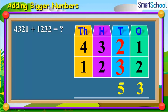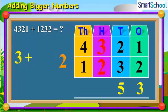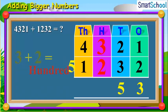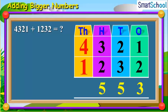Now, let us move on to the hundreds digits. Add the hundreds digits together, which will be 3 plus 2 is equal to 500. Now, place 5 at the hundreds place. Now, add the thousands digits together, which will be 4 plus 1 is equal to 5,000.